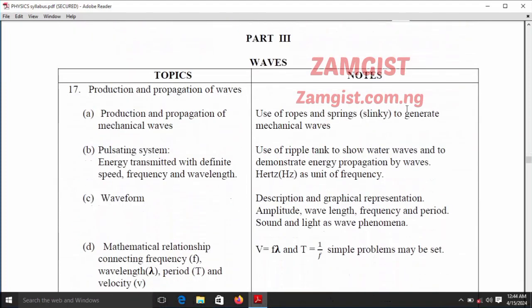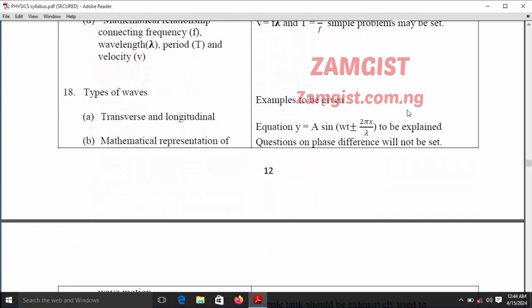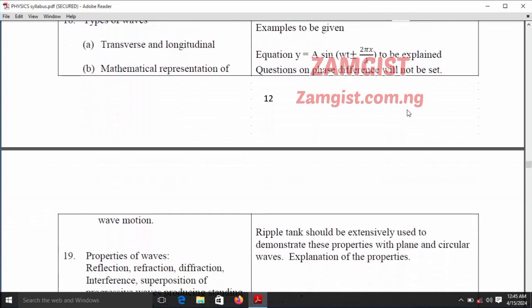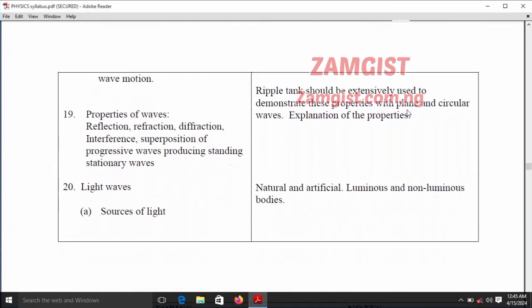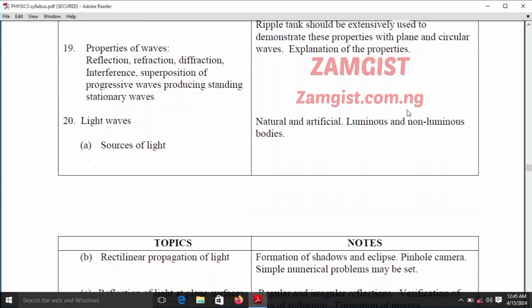We have come to Part 3, which is waves: production and propagation of waves. We have production and propagation of mechanical waves, pulsating system, energy transmitted with definite speed, frequency, and wavelength. We have waveform, mathematical relationship, types of waves: transverse and longitudinal, mathematical representation of wave motion, properties of waves, light waves.